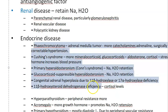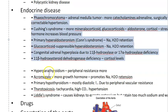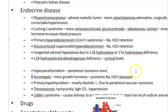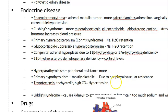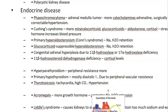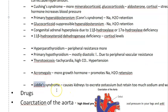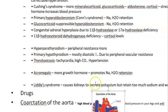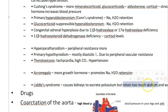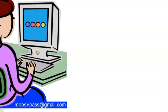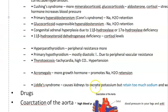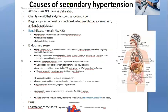To summarize the endocrine causes: steroids and adrenal gland issues, parathyroid, hypothyroidism, thyrotoxicosis, and acromegaly (growth hormone). Liddle's syndrome involves the kidney — it causes the kidney to excrete potassium but retain too much sodium, so again sodium and water retention leads to hypertension.